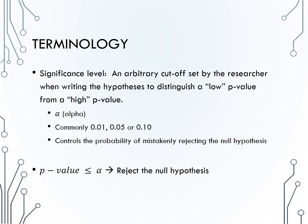Remember, a low p-value provides strong evidence against the null. So if our p-value is lower than alpha, we say we have strong enough evidence to reject the null hypothesis. If the p-value, on the other hand, is larger than alpha, that's a high p-value, which does not provide strong evidence, and therefore we fail to reject the null hypothesis.